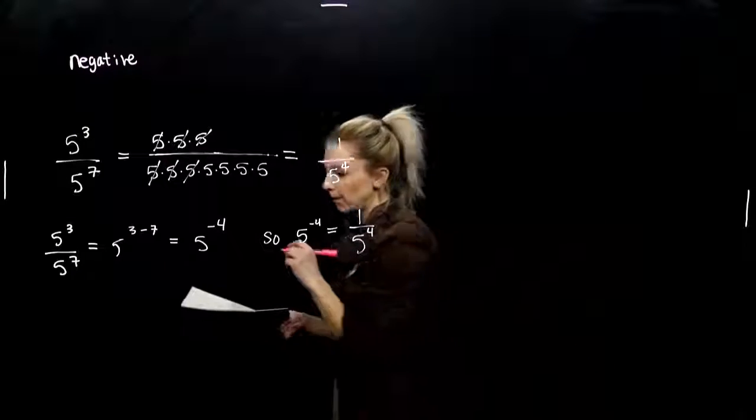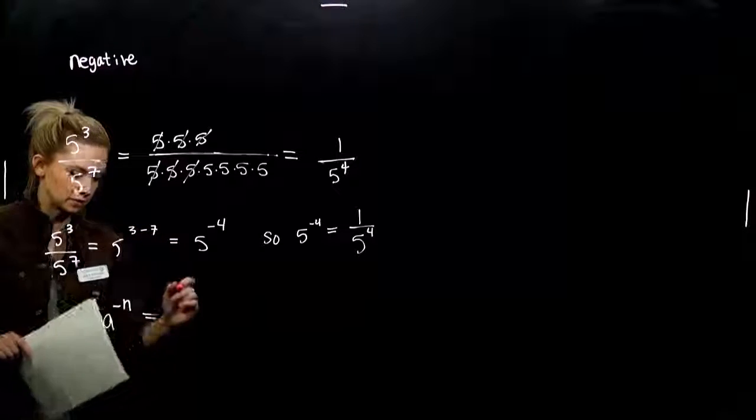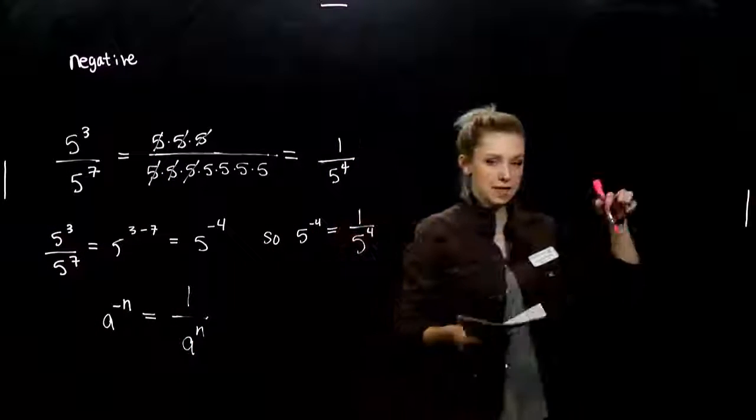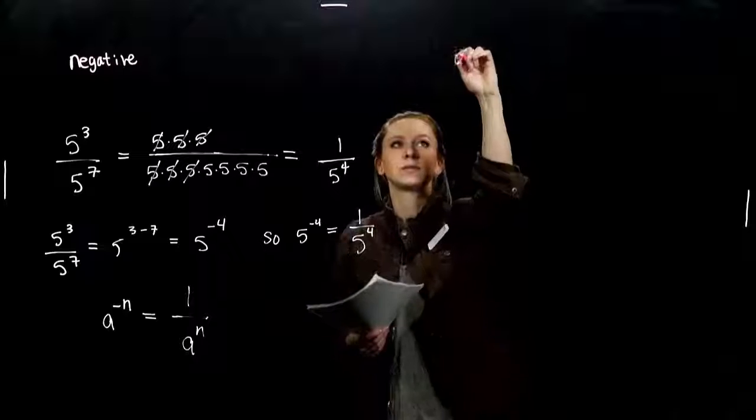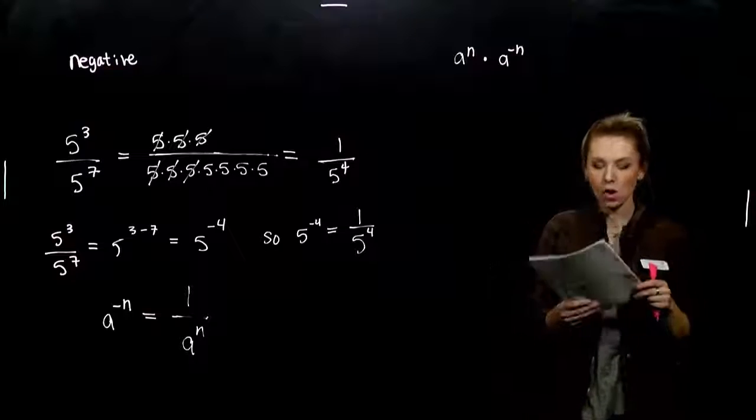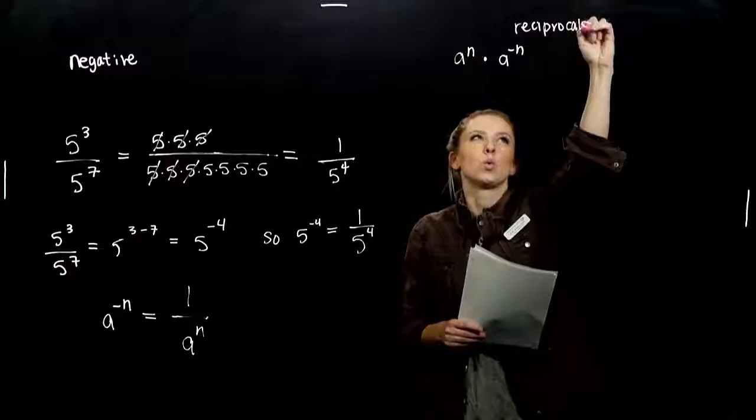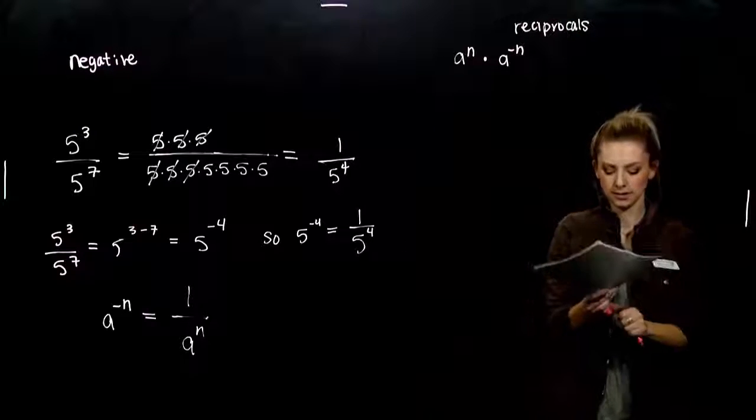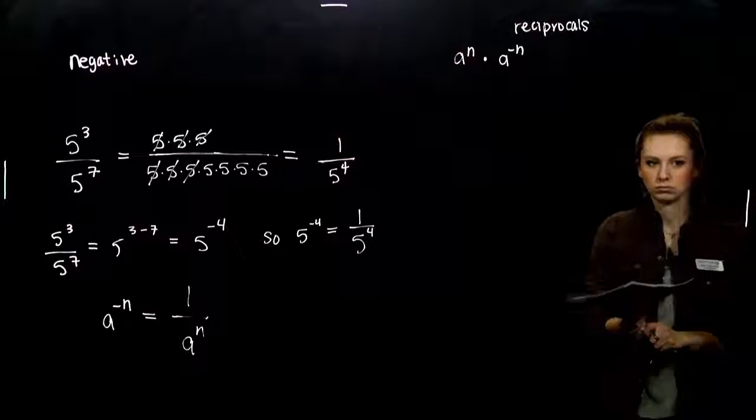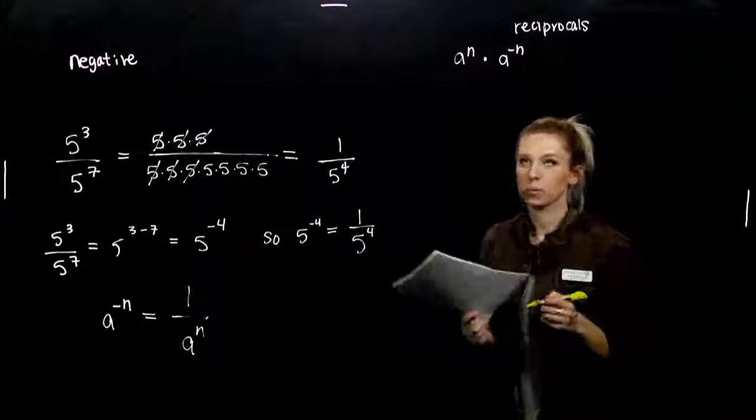So now we can finally deal with those negative exponents. If we have some base raised to a negative power, it's the same as having the reciprocal and positive power. So one thing that's special about these, what does it mean to be a reciprocal again?